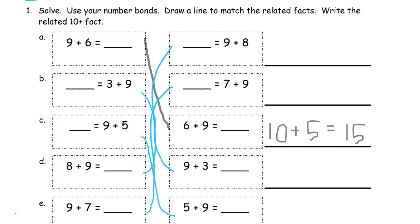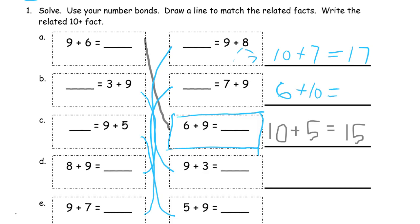For each one of these we're going to think of it as a ten-plus. Here we see nine plus eight. The trick: we take one from the eight, so we're looking at ten, seven. Ten plus seven is seventeen. Seven plus nine — think of this as six plus ten. Ten plus six is sixteen.